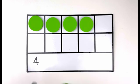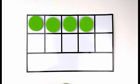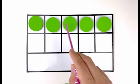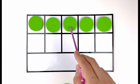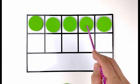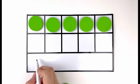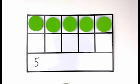Four. All right. Let's add another one. How many green circles do you see now? Let's count. One, two, three, four, five. Five green circles. Number five. Five.